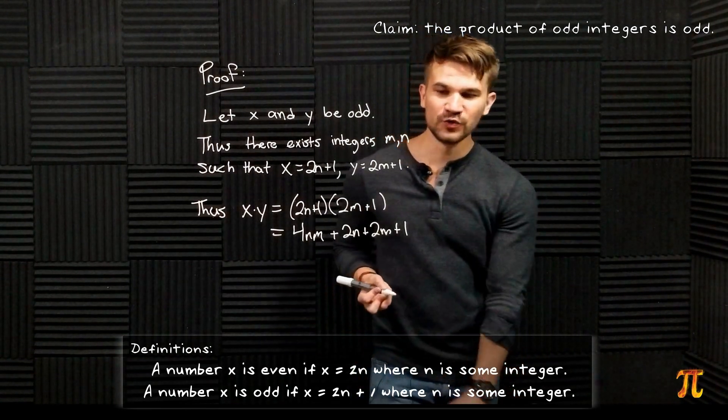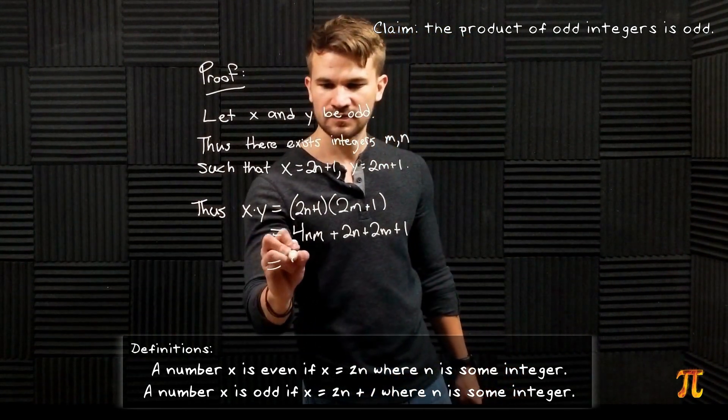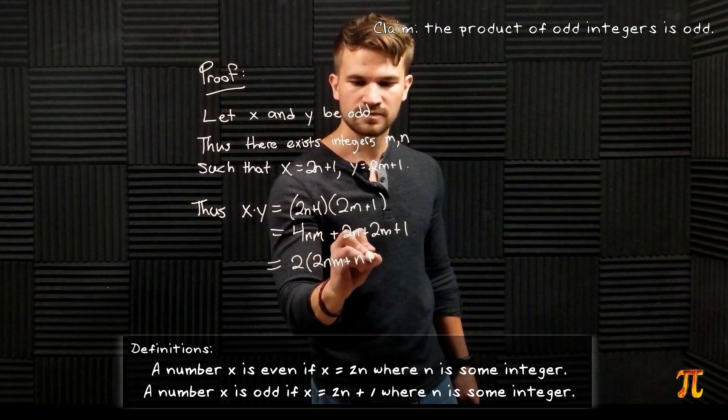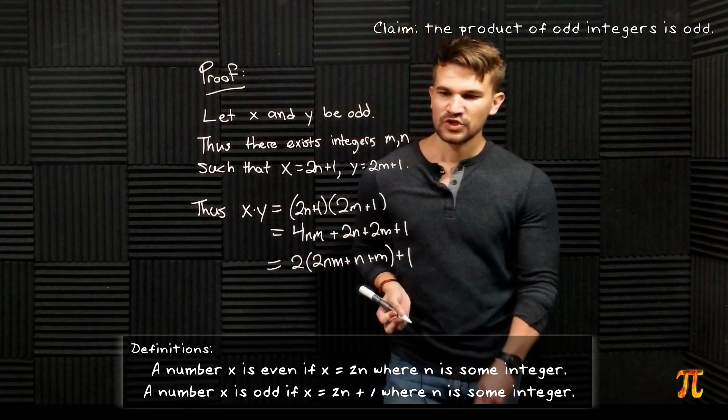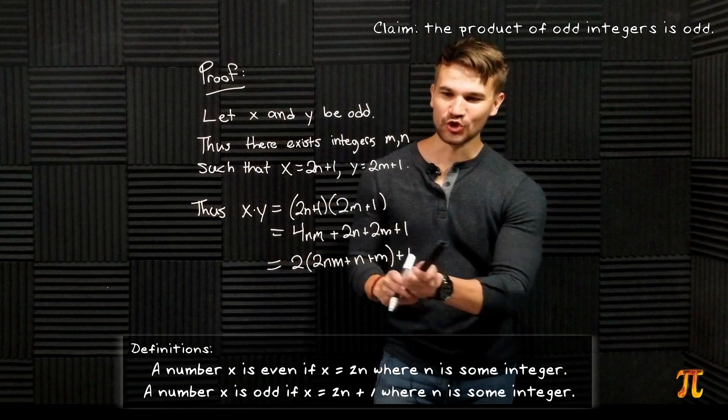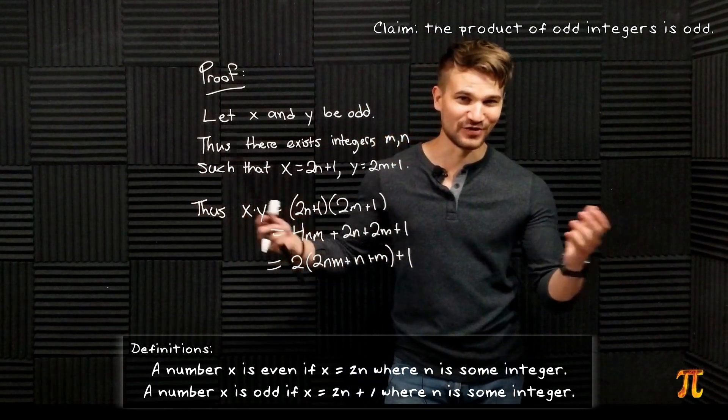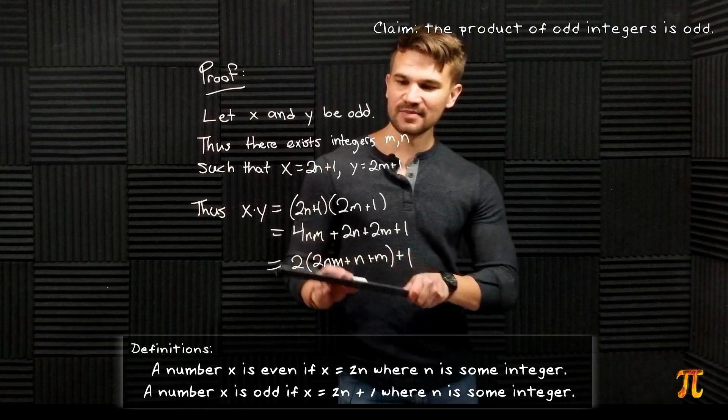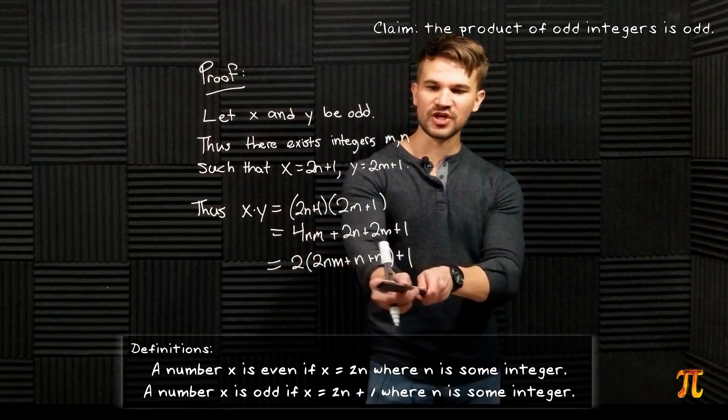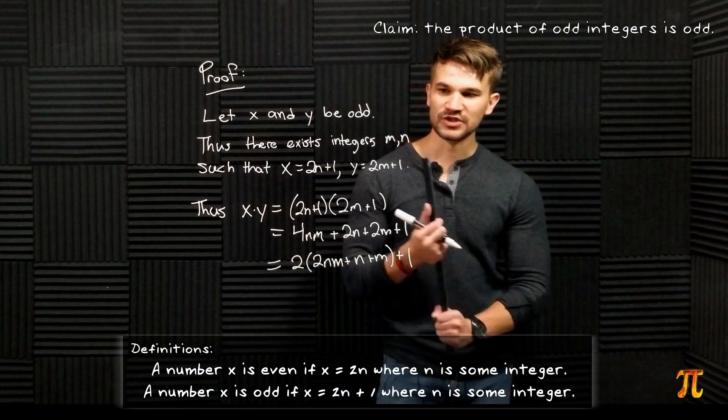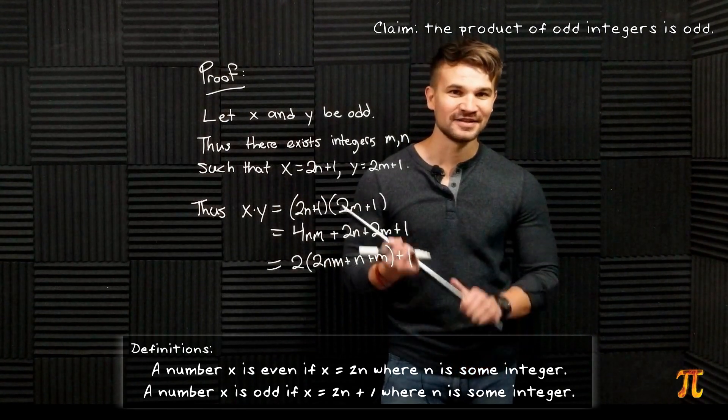We can factor out a 2 from the first three terms. And n and m are integers, so 2nm + n + m is another integer, and so x times y is equal to 2 times some integer plus 1. So x times y is odd by definition.